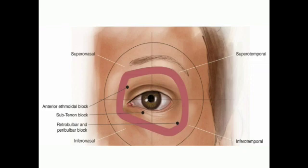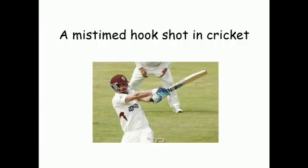A good example is a cricketing batsman who has mistimed a hook shot — this can classically result in a projectile approaching the eye inferior temporally. This is why it is always emphasized that cricketing batsmen should wear helmets, especially when facing a fast bowler.